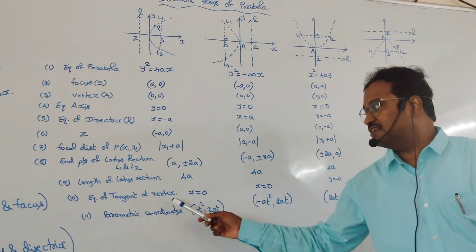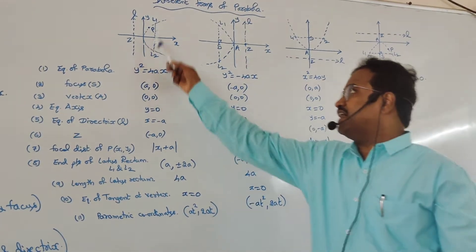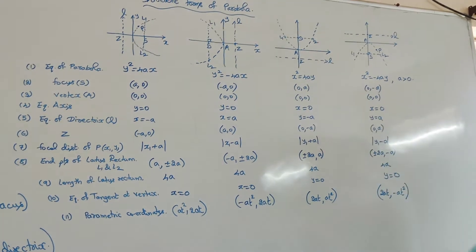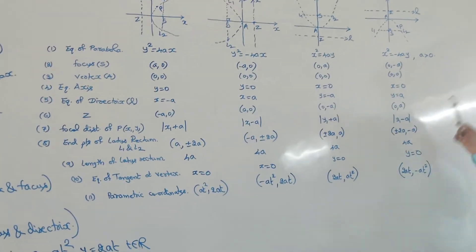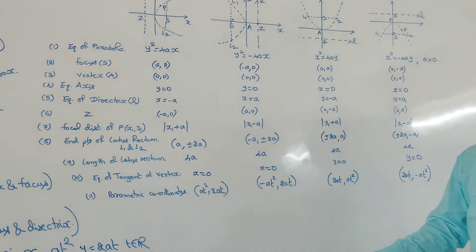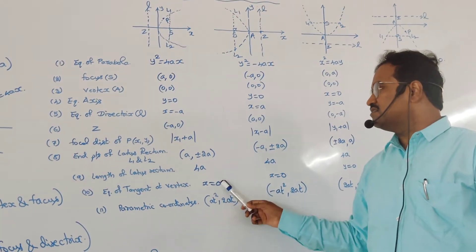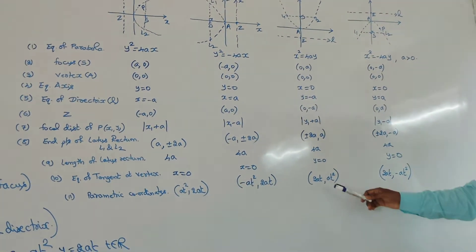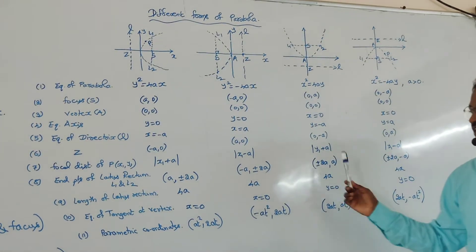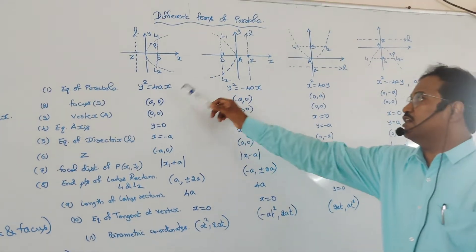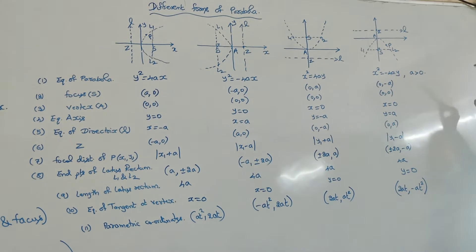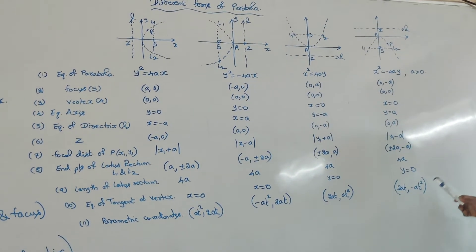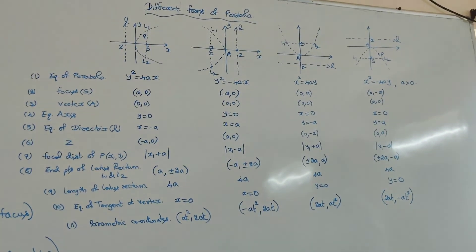The equation of the tangent at the vertex: for the first and second cases it is the y-axis, x = 0; for the third and fourth cases it is the x-axis, y = 0. The parametric coordinates: first case (At², 2At); second case (−At², 2At); third case (2At, At²); fourth case (2At, −At²). Note that x and y are interchanged between the first and third forms, and between the second and fourth forms.